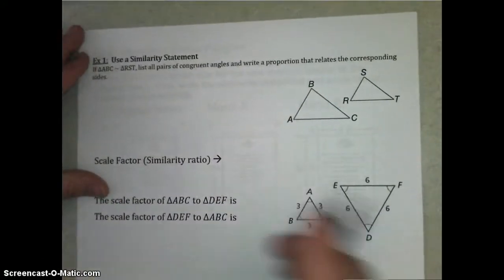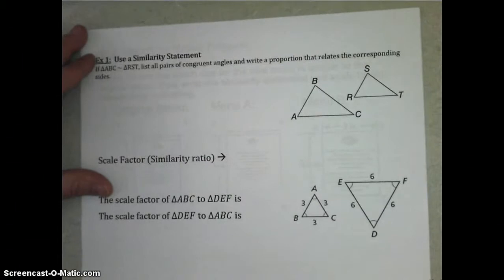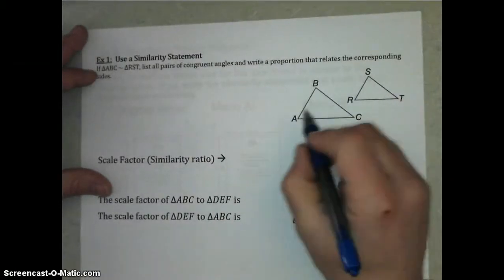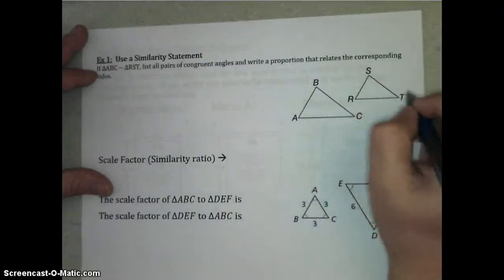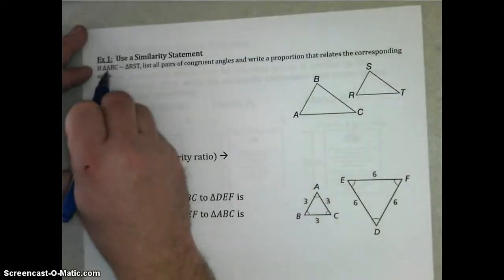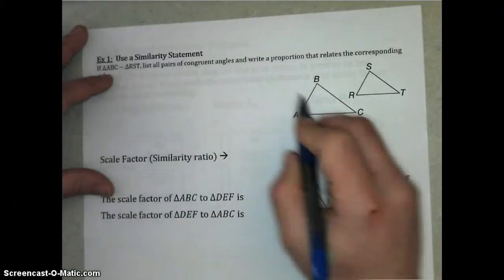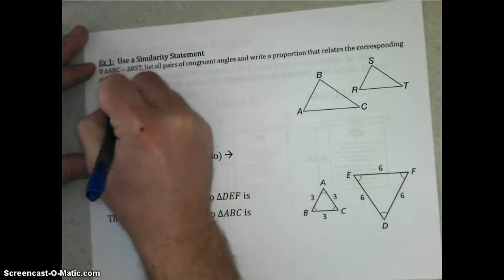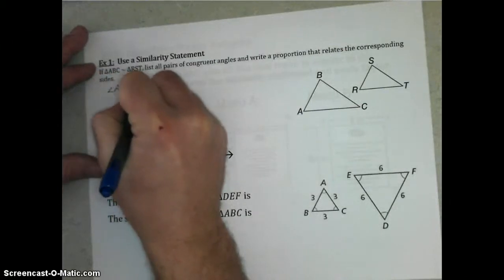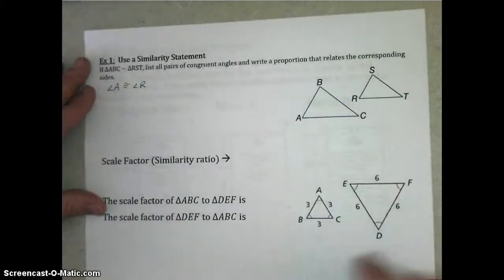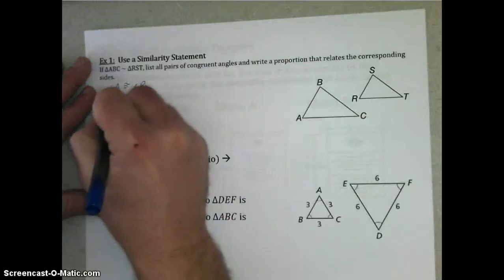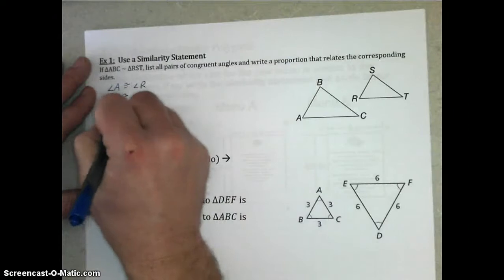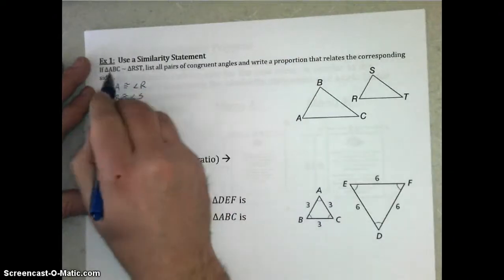So let's try example 1. We're going to use similarity statements to talk about similar triangles. So in this example, if triangle ABC is similar to RST, you should notice that A comes first in its label, and R comes first in its label. Angle R and angle A should be congruent. So we can say angle A is congruent to angle R. Angle B is corresponding and congruent to angle S. Angle C is congruent to angle T. And those are all in the same place. So that's how we write all the pairs of corresponding angles.